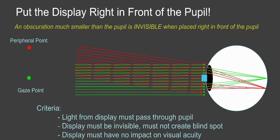Well, it turns out as long as the display is a lot smaller than the pupil, we can put it right in front of the pupil. So as you see here, if we put it in front of the pupil, obviously the light coming out of the display will go through the pupil because it's sitting right in the middle of it.